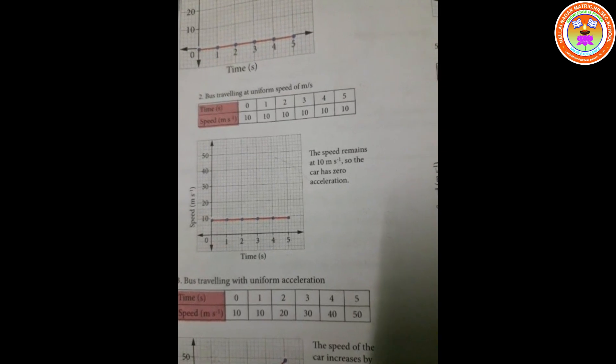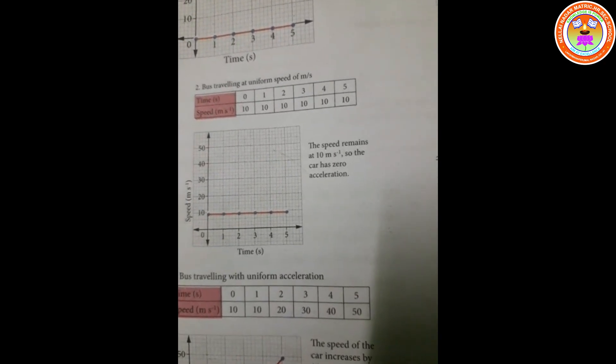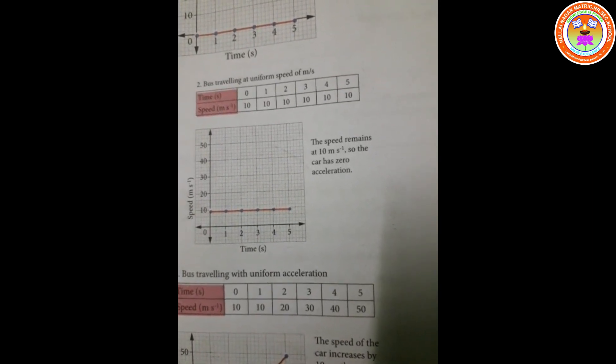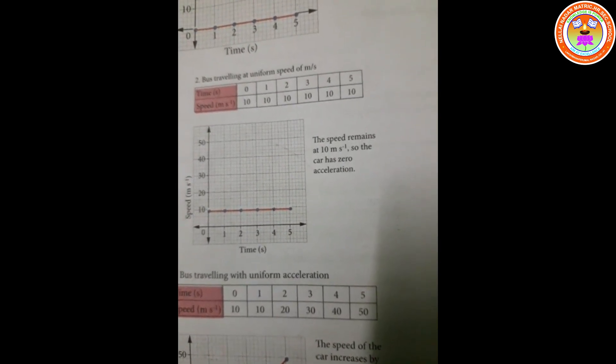Next: bus travelling at uniform speed. We have 10 m/s for each second, so we get a straight line. The speed remains constant at 10 meters per second, so the car has 0 acceleration. Acceleration is nothing but change in velocity or change in speed. Here the speed is always 10 — there is no change in speed, so there is no acceleration. The car or bus has 0 acceleration.